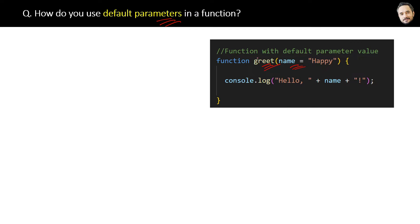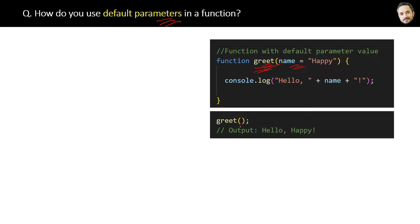if we call this method greet like this without any argument, then the default value of the name parameter will be set to 'Happy'. So the output will be 'Hello, Happy!' But if we pass the argument from the method